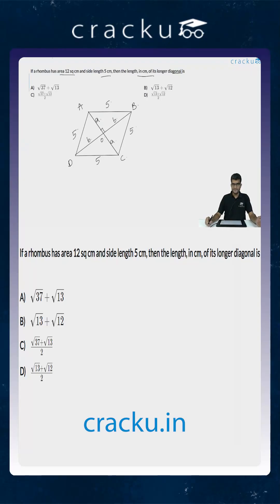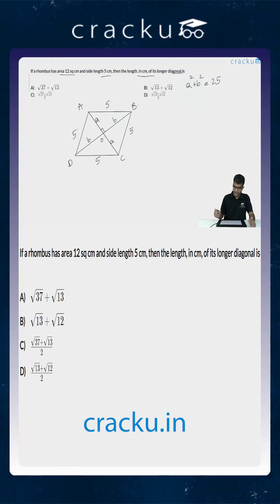Looking at any of the triangles AOB, DOC, COD, or DOA, all of them are right angle triangles. So using Pythagoras theorem, a² + b² = 5² = 25. We are also given that the area of the rhombus is 12 square centimetres.